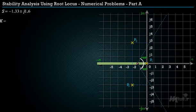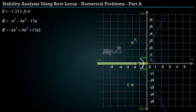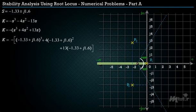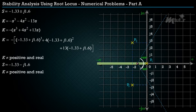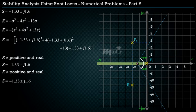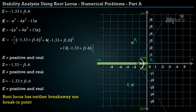Checking the value of K using s = −1.33 ± j1.6 shows that K is not real and positive. Since K must be real and positive for valid breakaway or break-in points, these points are not valid. Hence the root locus has neither a breakaway nor a break-in point.